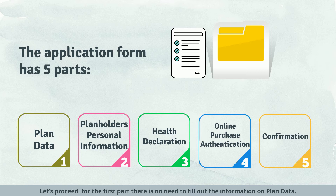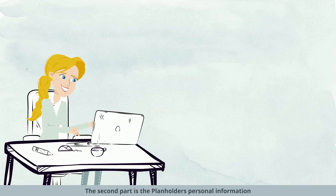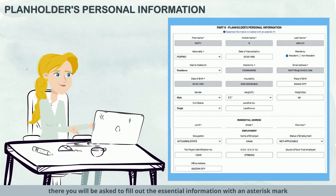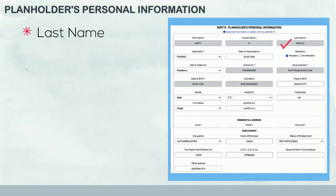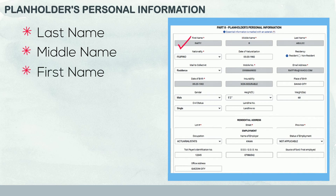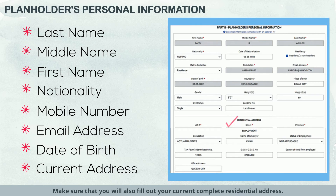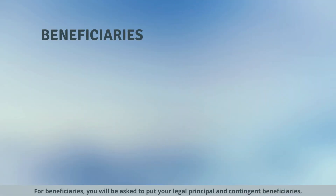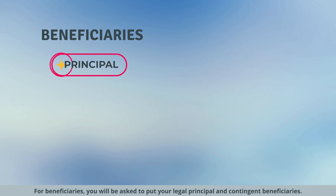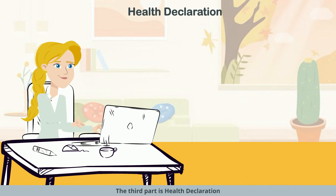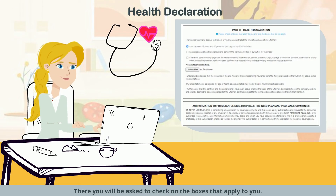For the first part, there is no need to fill out the information on plan data. The second part is the plan holder's personal information. There you will be asked to fill out the essential information marked with an asterisk: last name, middle name, first name, nationality, mobile number, email address, and date of birth. Make sure that you also fill out your current complete residential address. For beneficiaries, you will be asked to put your legal principal and contingent beneficiaries. The third part is health declaration, where you will be asked to check the boxes that apply to you.